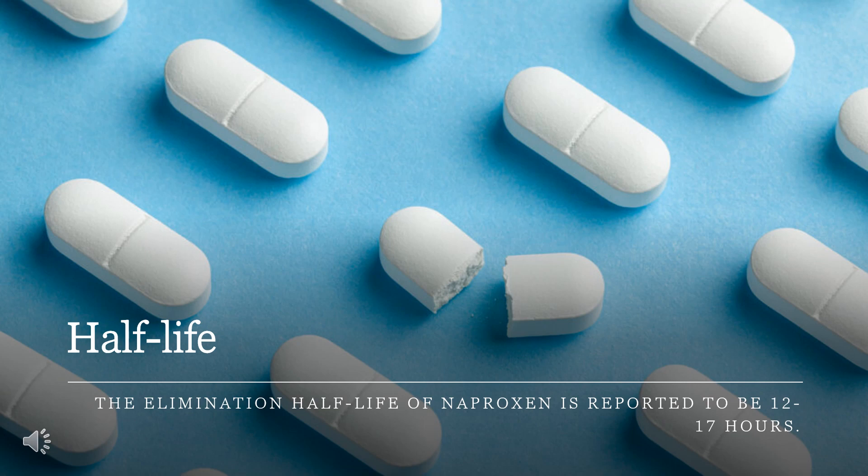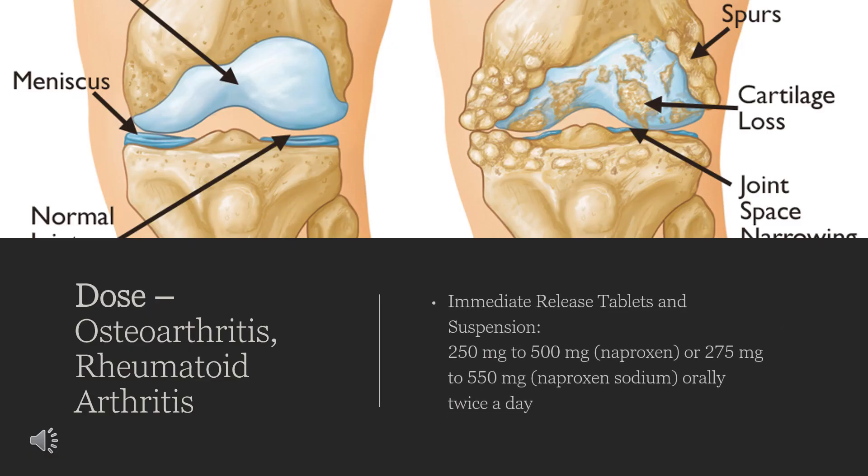The elimination half-life of naproxen is reported to be 12 to 17 hours. For osteoarthritis and rheumatoid arthritis, dosing for immediate release tablets and suspension is 250 mg to 500 mg naproxen (or 275 mg to 550 mg naproxen sodium) orally twice a day. Controlled release dosing is 750 mg to 1000 mg orally once a day.